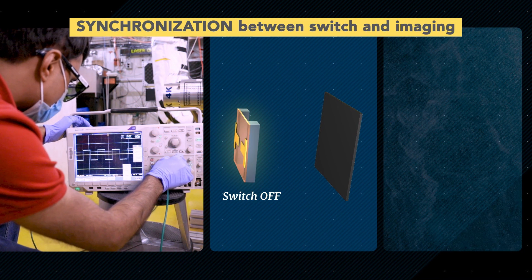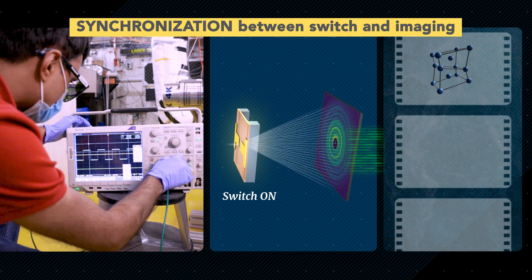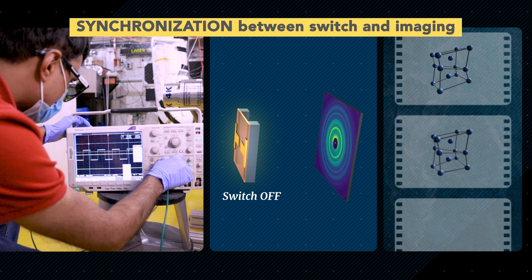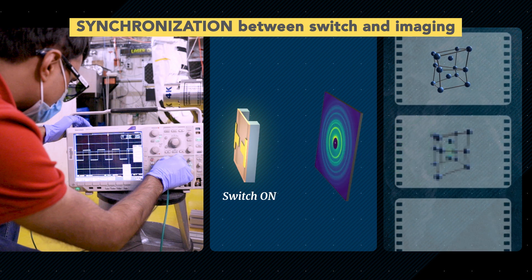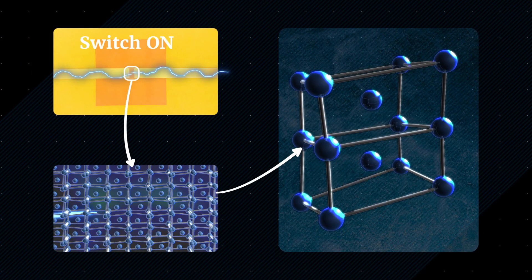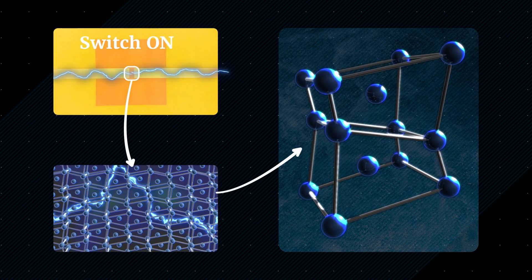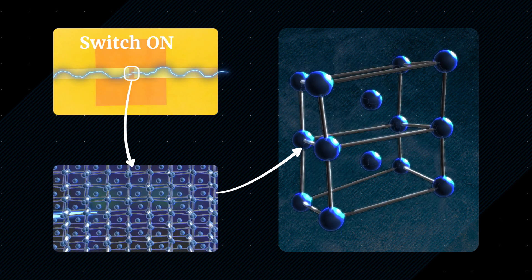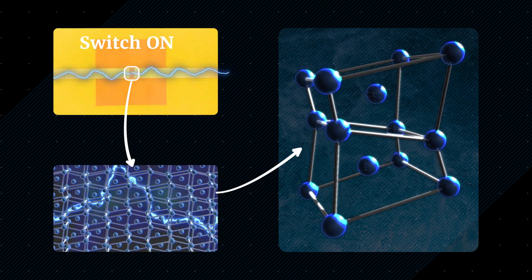So we cycle the switches on and off several times, each time taking a snapshot of the atomic structure at a different point in the device's cycle. And we end up with an ultra-fast stroboscopic movie of the atoms moving inside the electronic device on timescales of a few billionths of a second.